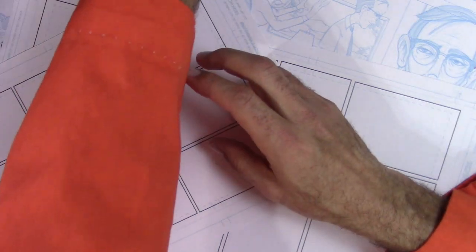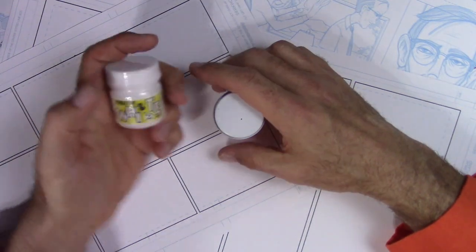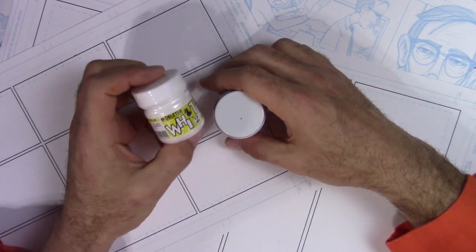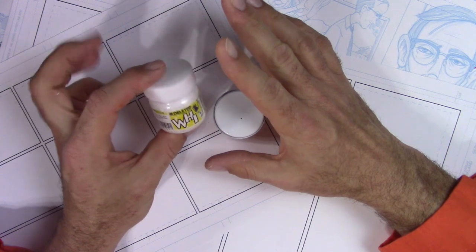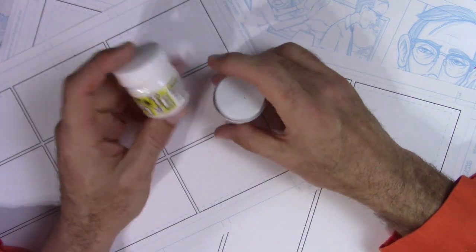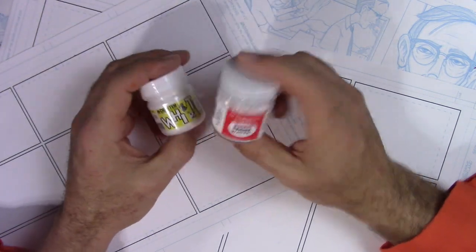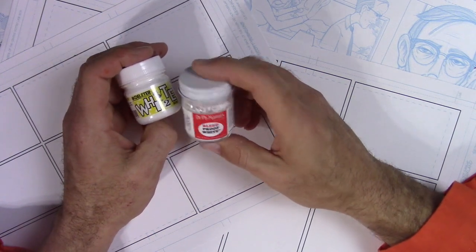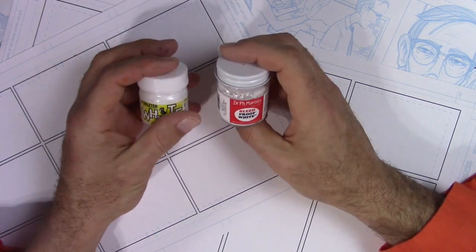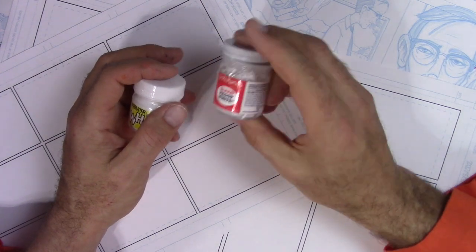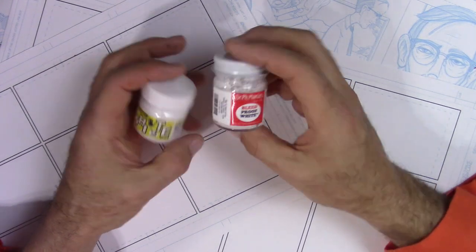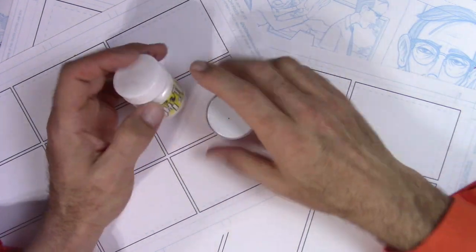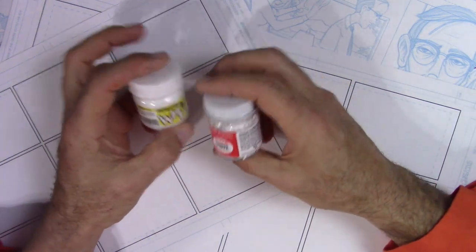Another nice ink is Dr. P.H. Martin's Black Star ink. This is a matte ink and this is a little different because it's an acrylic base. It's not an acrylic paint, it's more of an ink. It's not thick. Before I discovered the Deleter, I used this all the time. This is a nice ink as well. For your whites, the Deleter also has a white - I think they have white number one and two. I've only tried number two and it seems to work pretty well.